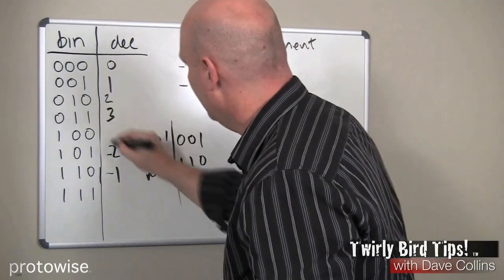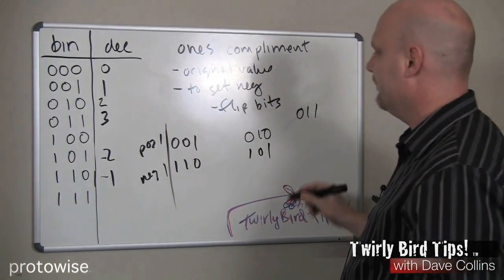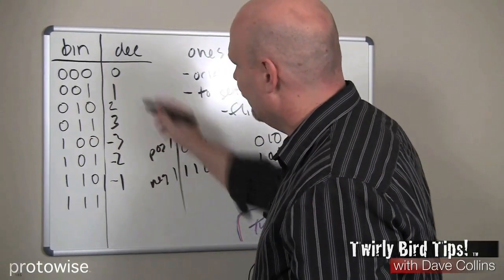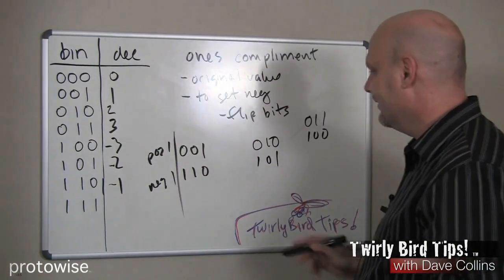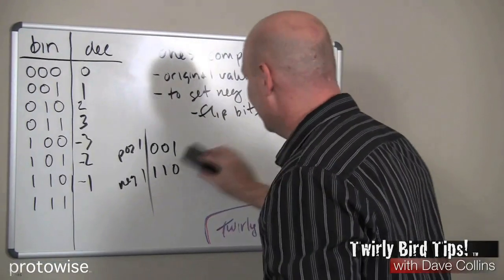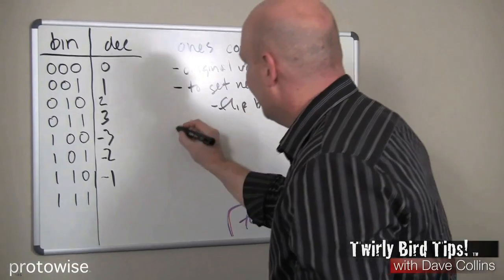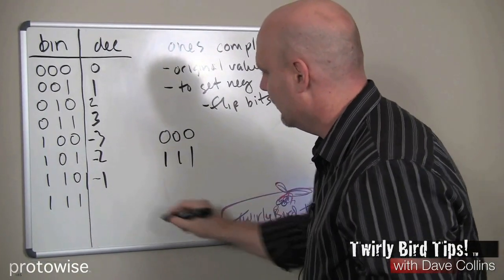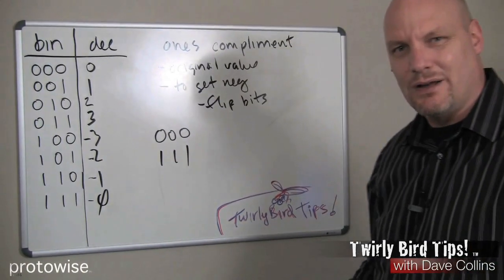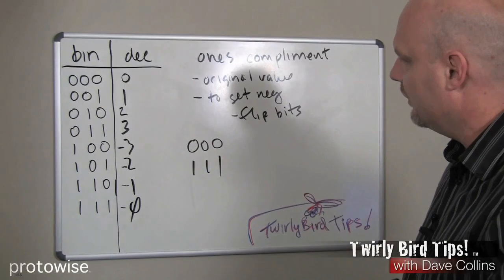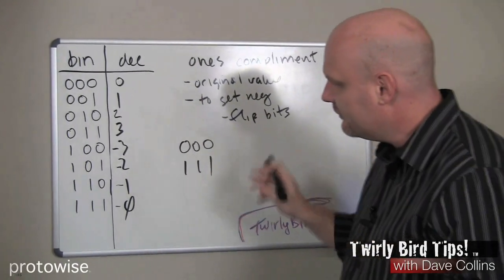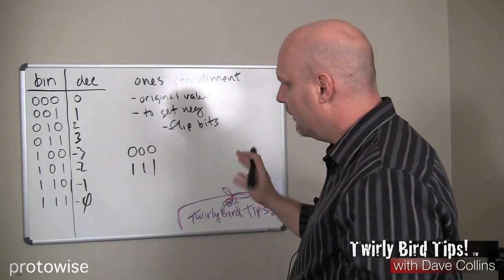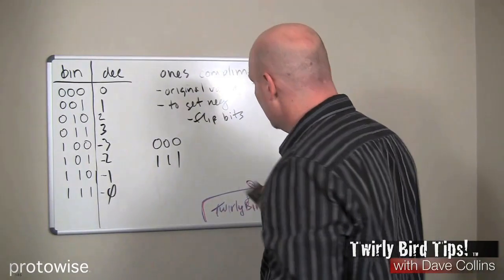Notice we still have the zero problem. Zero is represented as 0 0 0, and flipping those bits gives us 1 1 1 — again, a negative zero. It's not intuitive and kind of ugly, but it's another way to represent negative numbers. Again, there are hardware implementation issues. We're going to solve both of these problems, however, with the notion of two's complement.